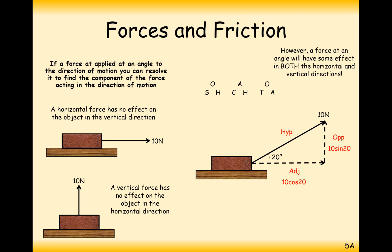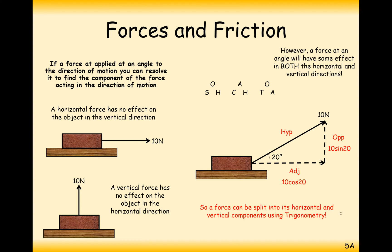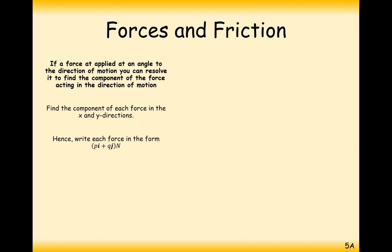Neither of these two component forces should be bigger than the original 10 newton force — they should both be smaller. That's how we work out horizontal and vertical components: a force can be split into horizontal and vertical components using trigonometry, and that's what we'll be focusing on in this chapter.